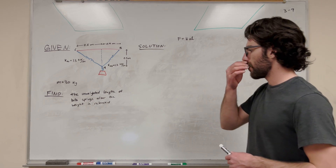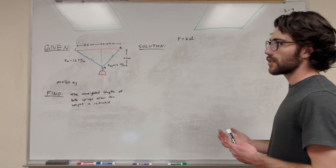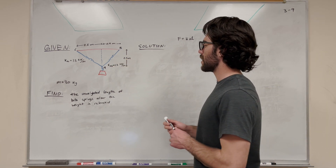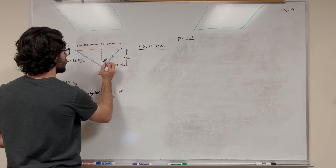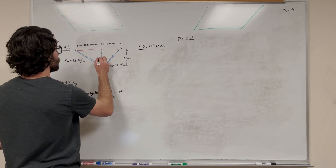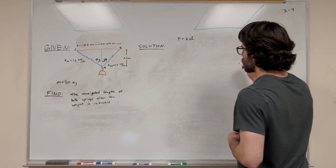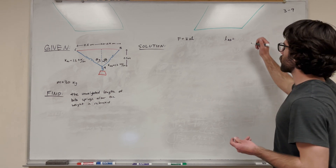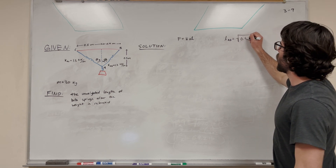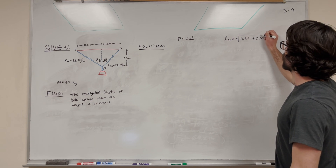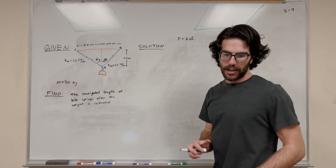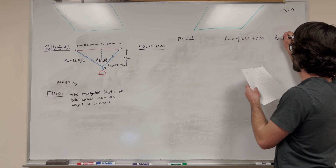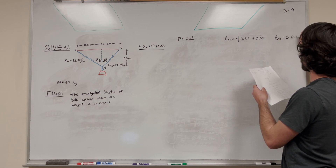There are a couple other things we might want to find first: the lengths and the angles of these springs. Let's look at this first triangle. We want to find theta and the length. For length AB, we use the Pythagorean theorem: A² + B² = C². So we compute 0.5² + 0.4², and we get that length AB is equal to 0.640 meters.